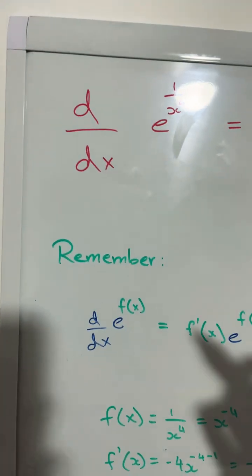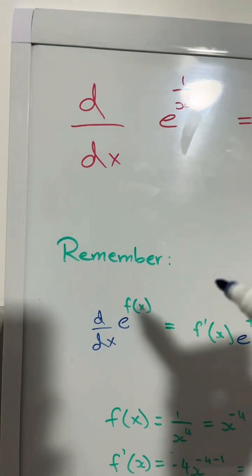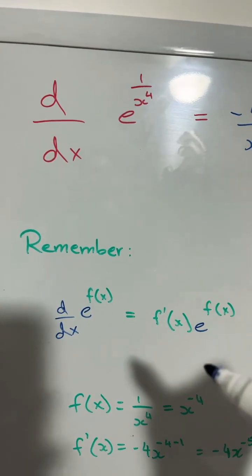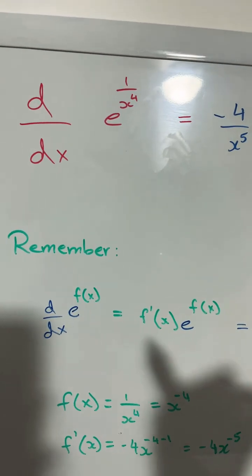All we need to remember is that when we are deriving e to the power of f of x, the derivative is always f dash of x times e to the power of f of x.